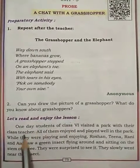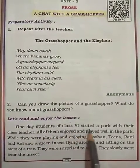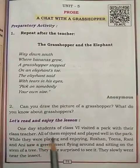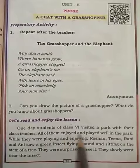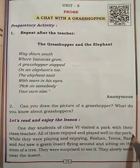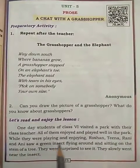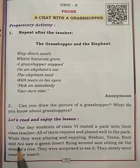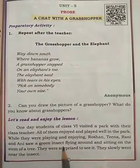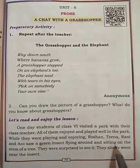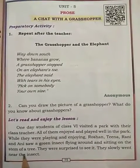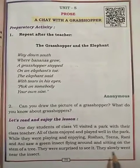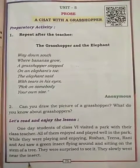One day, students of Class 6 visited a park with their class teacher. All of them enjoyed and played well in the park. While they were playing and enjoying, Roshan, Tina, Rani, and Annie saw a green insect flying around and sitting on the stem of a tree. They were surprised to see it and slowly went near the insect.